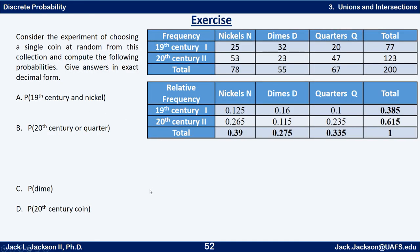Suppose we take the event of drawing a single coin randomly from the whole group. The probability it's a nickel and a 19th century coin is 0.125. The probability it's a dime is 0.275. The probability it's a 20th century coin is 0.615. Now use this table to find: the probability it's 19th century and a nickel; the probability it's 20th century or a quarter; the probability of a dime; and the probability of a 20th century coin. Press pause now.